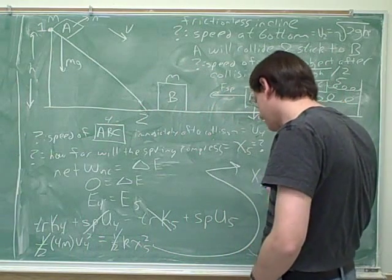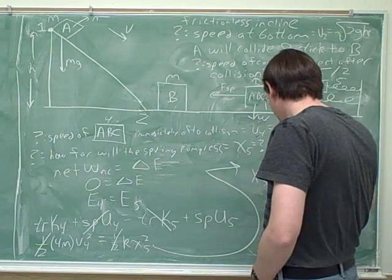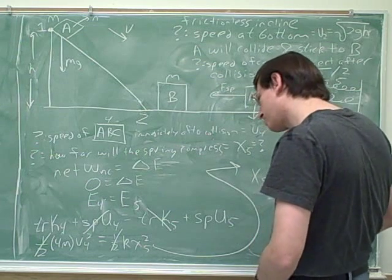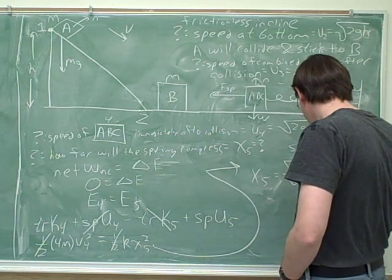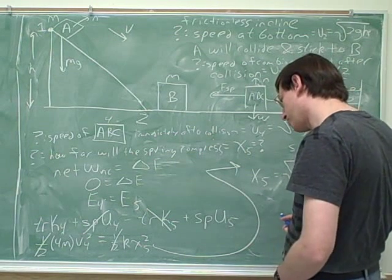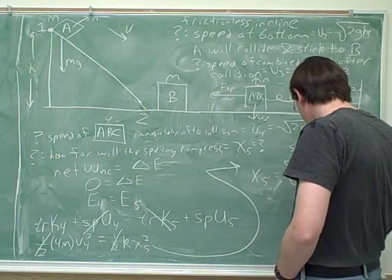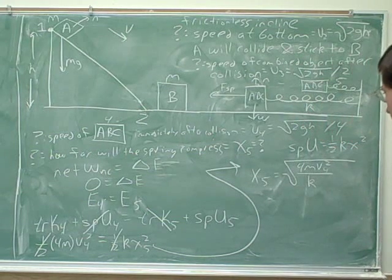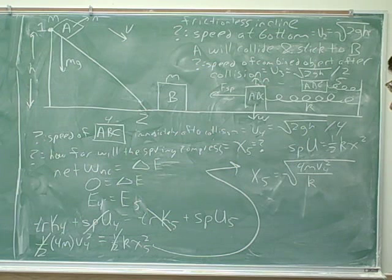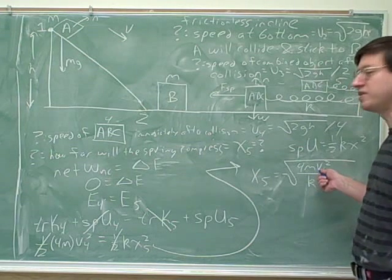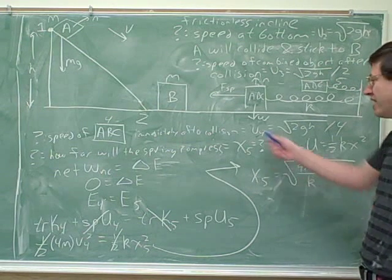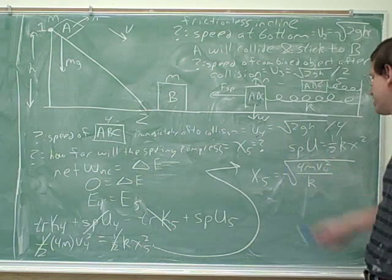So we get x 5 is the square root of 4m v sub 4 squared. Is this what you got? Yeah. m v sub 4 squared over k. Then I would plug in the value that we have for v sub 4. We're not allowed to use v sub 4 in our answer because that's a variable we made up. We have to actually use this expression here.